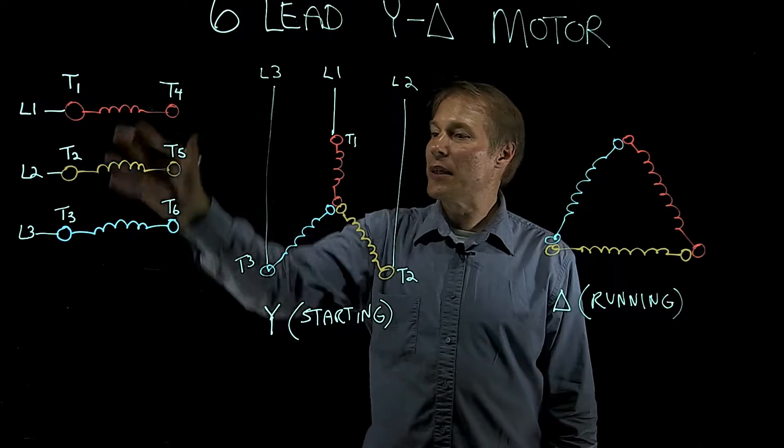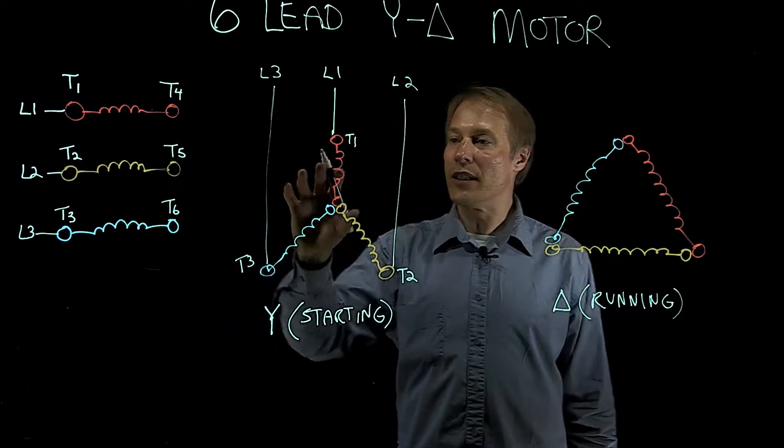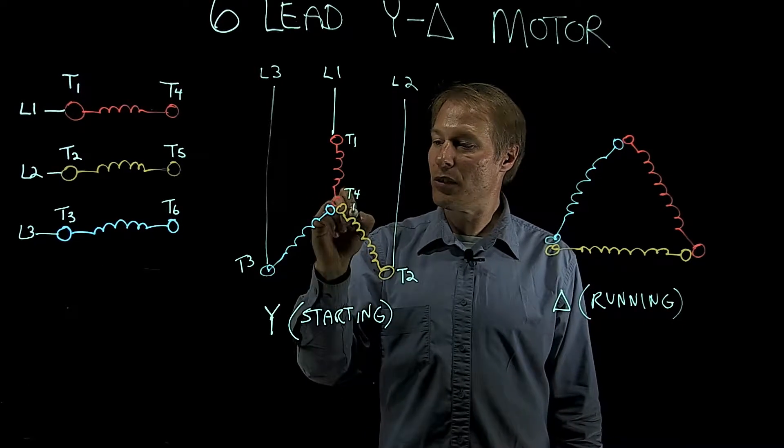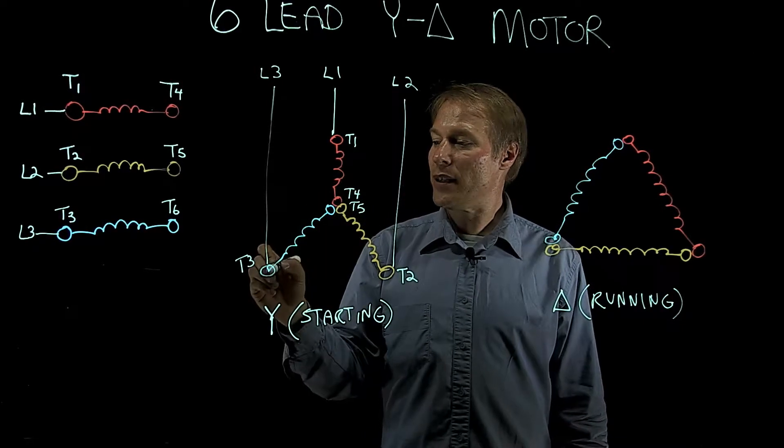Now taking this information and transferring it over here, well if this is T1, this will be T4. T2, this has to be T5. And the other side of T3, this is T6.